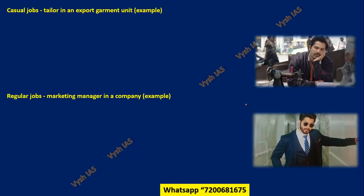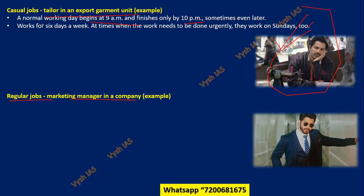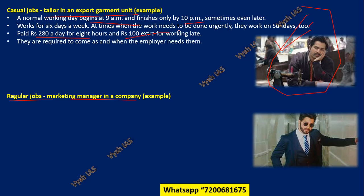The last concept is the difference between casual jobs and regular jobs. A casual job example is a tailor in an export garment unit doing contract-basis work — you can see the movie 'Sui Dhaaga' as a reference. A normal working day begins at 9 AM and finishes only by 10 PM or later — no fixed 8-hour shift. They work six days a week; even Sunday they may be called in for urgent work. Pay may be around 280 rupees a day for eight hours with something extra for late hours — much lower than a proper salaried job.